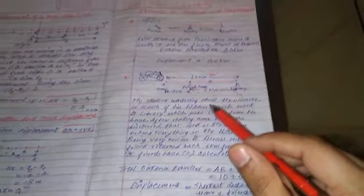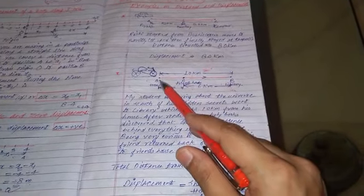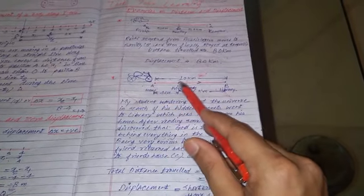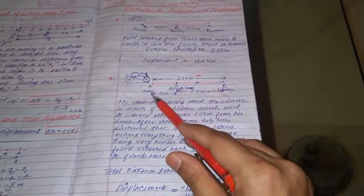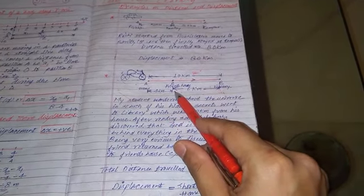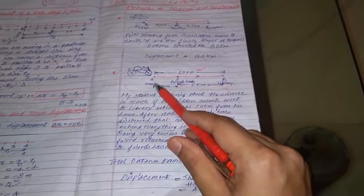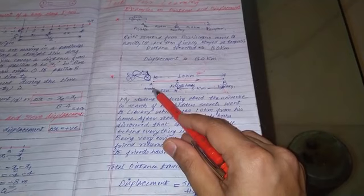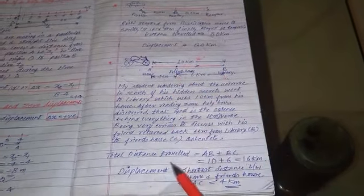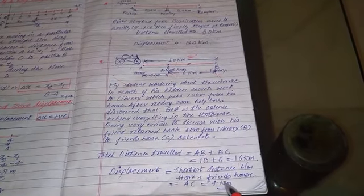So if you want to discover, find out what is the displacement, we can see that A is his initial position and C is his final position. That means home is his initial position, the final position is at friend's house. So the shortest distance, that is displacement between A and his friend's house, will be 4 km. You can see easily displacement is AC, that is 4 kilometers.